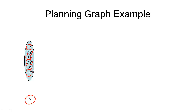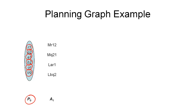With proposition layer P0 fully defined, we can see which nodes are in the following action layer. These are only those action symbols that would be applicable in this state — four individual nodes here, altogether making up action layer A1.